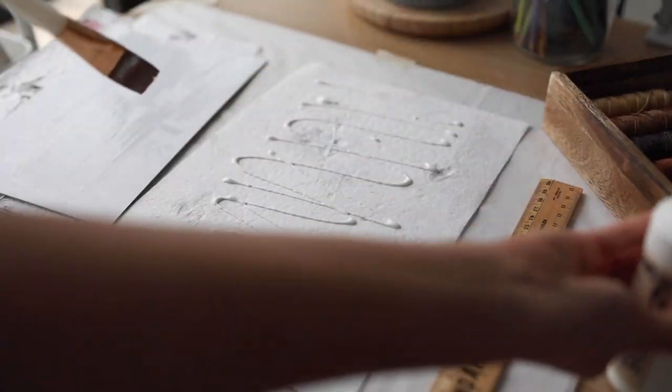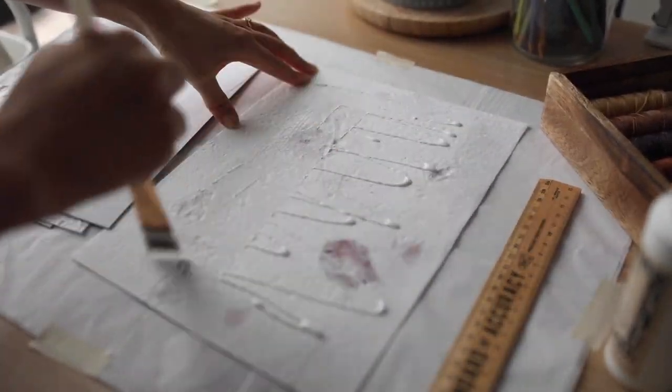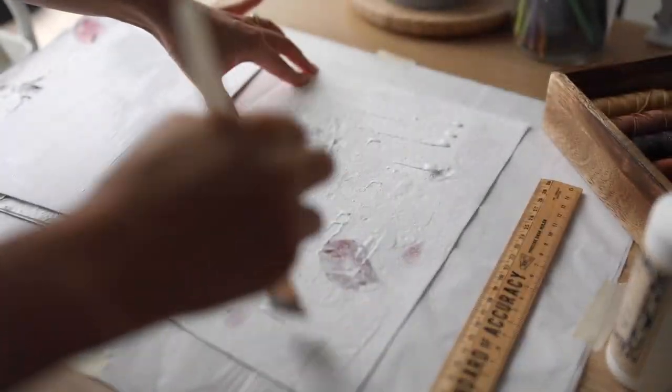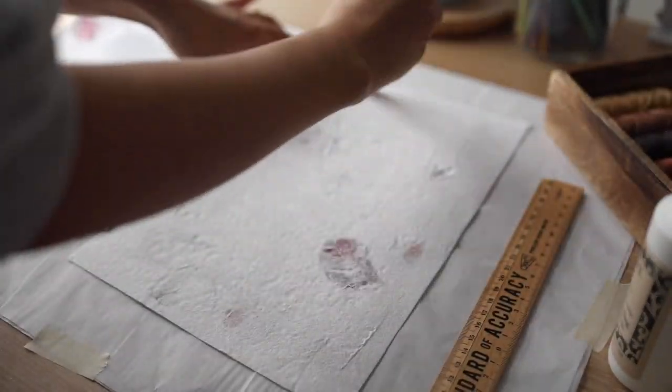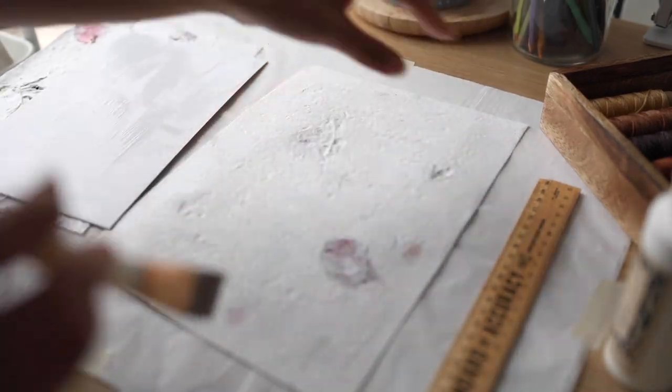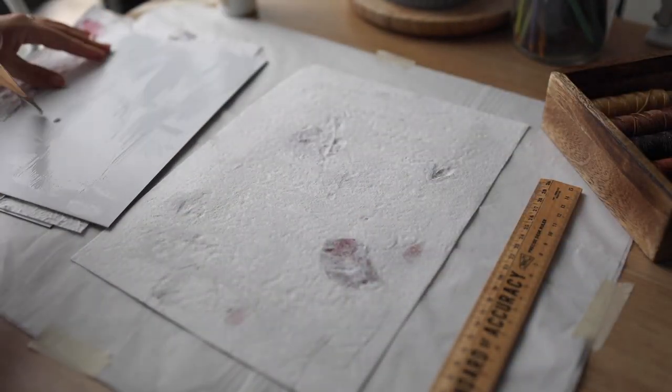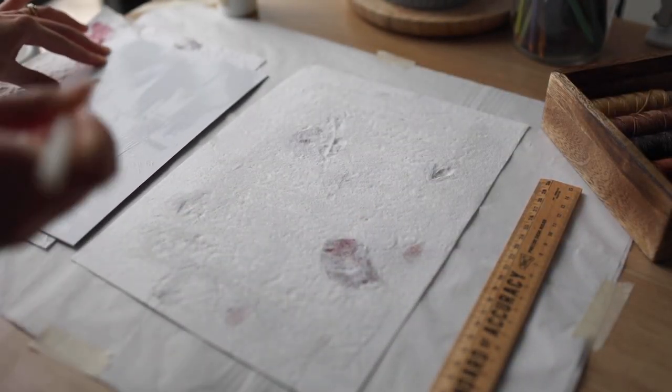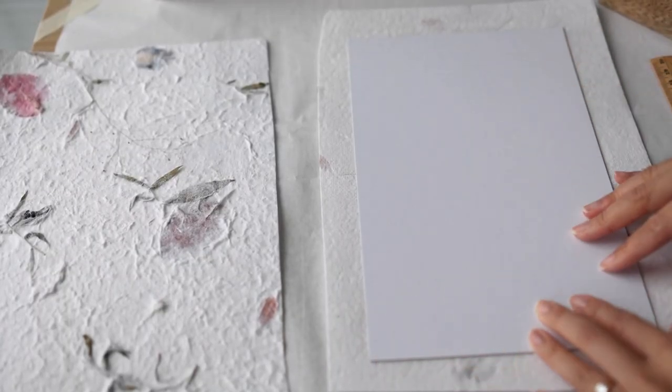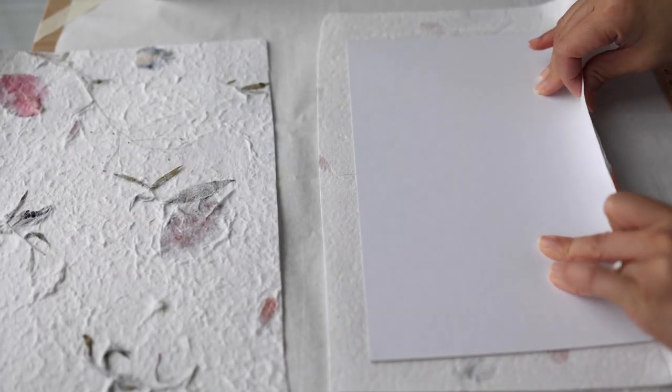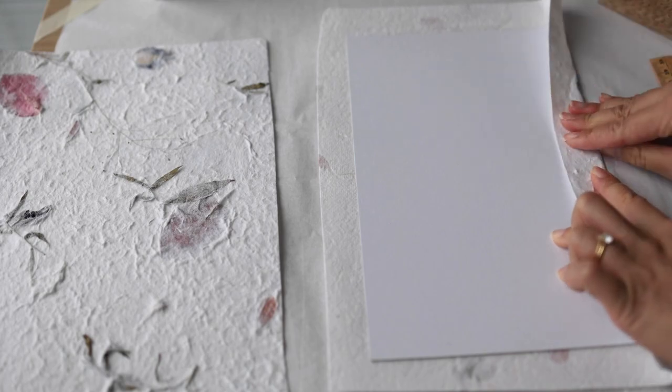I remember my high school art teacher telling us that pH neutral glue is important for bookbinding because over time it doesn't yellow and it remains flexible. So I'm just going to apply this glue down onto the wrapping paper with a brush. Then I'm going to press my chipboard into it and I'll fold edges over.